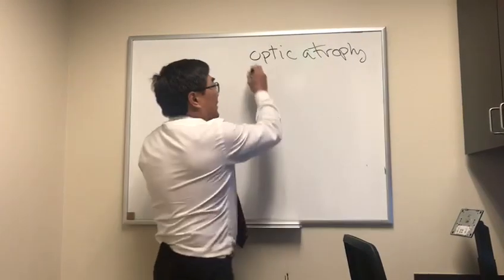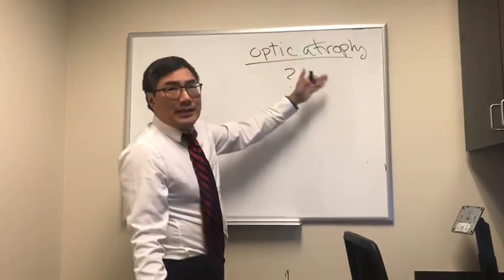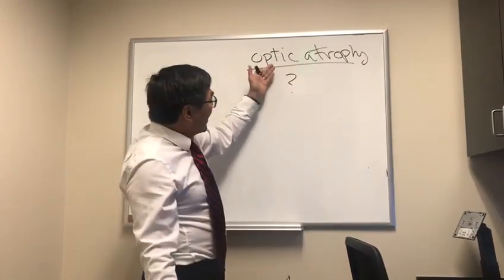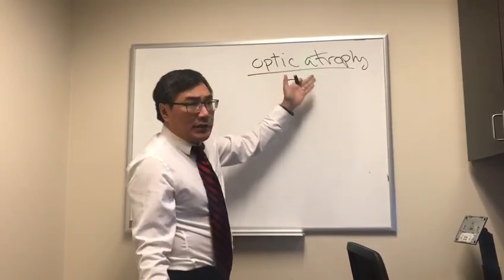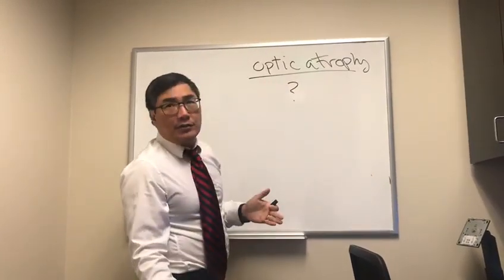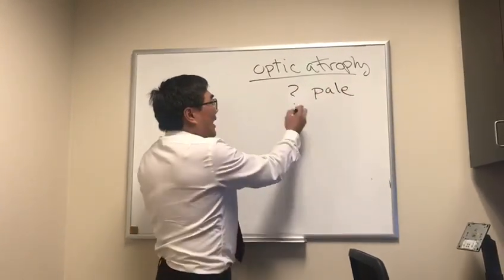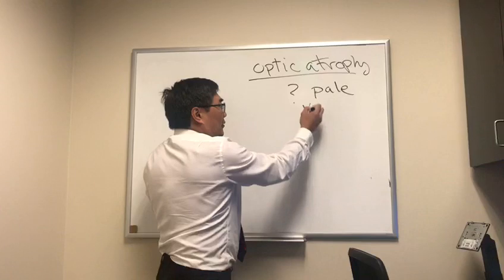The first question is, is it real or is it pseudopale? A nerve can look pale but isn't pale. We would not want to label a nerve as optic atrophy if we didn't have the clinical evidence to support the diagnosis that the nerve is pale. The way to do that is by establishing that there is or is not an optic neuropathy.